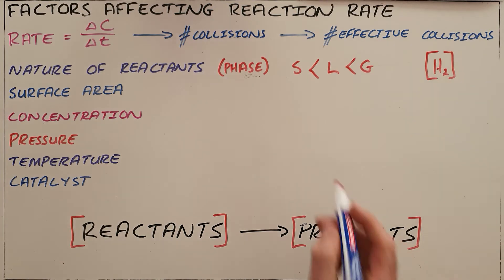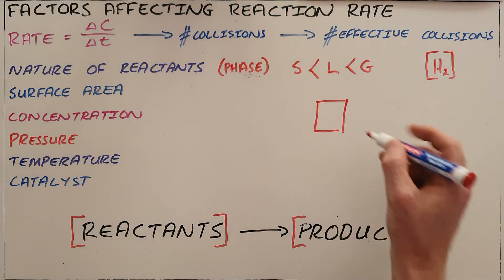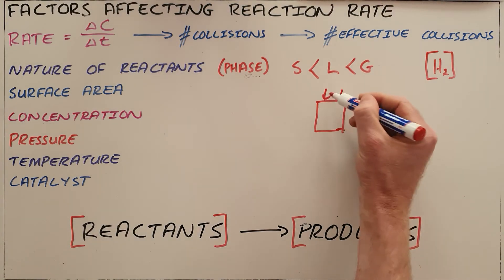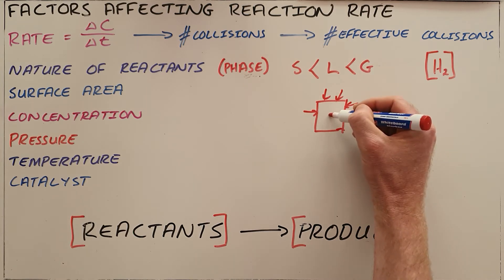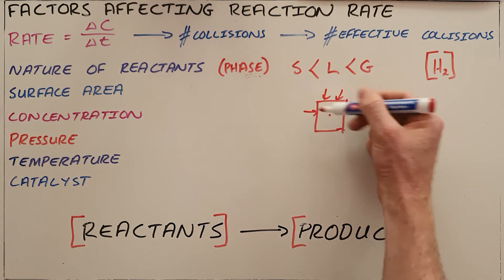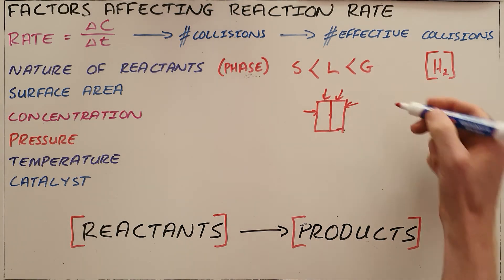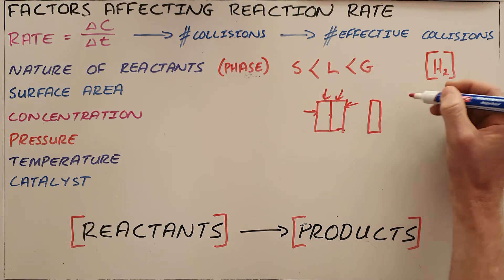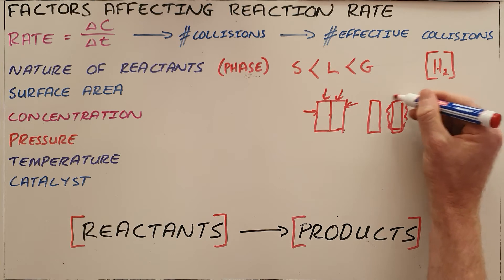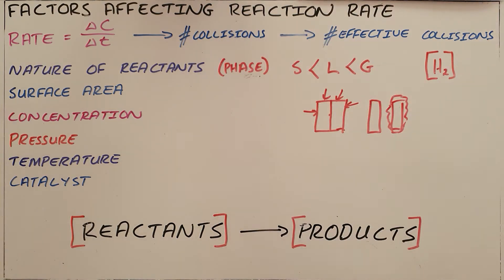When we're talking about surface area, what we are saying is that if you have a square of substance that is trying to react, the reaction can only take place on the surface. A reaction cannot take part with one of the molecules in the middle because it is not in contact. So when we increase the surface area, if you continually cut the substance down into smaller and smaller pieces, you're increasing the surface area where reactions can happen, thereby increasing the number of collisions, thereby increasing the number of effective collisions.